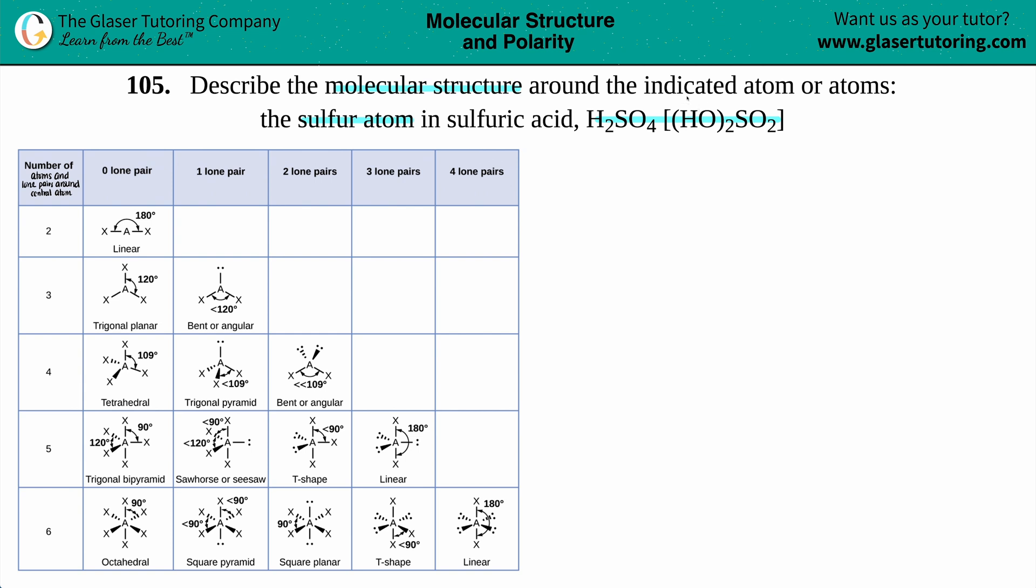So by writing it this way, they do give us a little bit of information as to how we should draw it. Now just know that if you're trying to find a molecular structure, the easiest way to go about this is to just pause and write out the Lewis structure. There's a lot of things that you could find out from a Lewis structure and molecular structure is one of them.